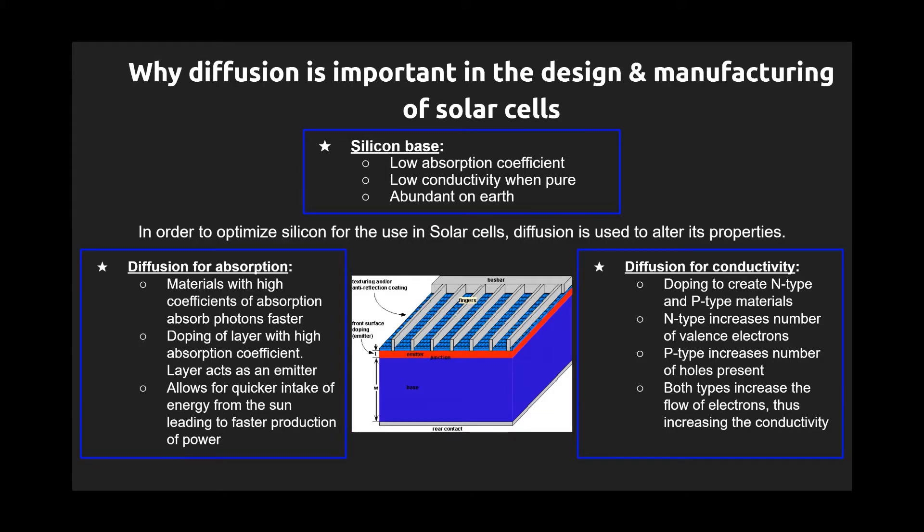To increase the silicon's ability to absorb photons from sunlight, a material with a high coefficient of absorption is doped into the surface of the silicon, allowing the cell to more readily take the energy from the sun. This surface layer acts as an emitter which takes energy from the sun and transfers it into the silicon base.